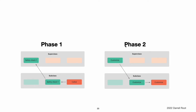Here is how phase two looks for the same initialization call. The superclass's designated initializer now has an opportunity to customize the instance further, although it does not have to. Once the superclass's designated initializer is finished, the subclass's designated initializer can perform additional customization, although again it does not have to. Finally, once the subclass's designated initializer is finished, the convenience initializer that was originally called can perform additional customization.